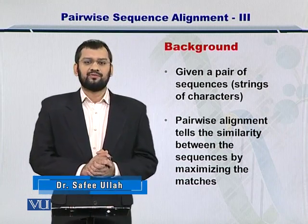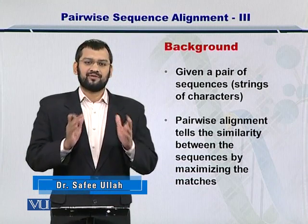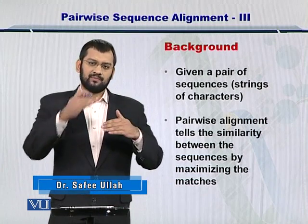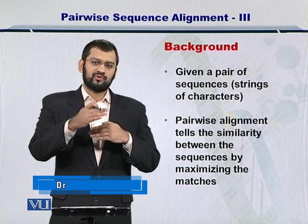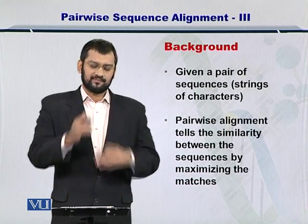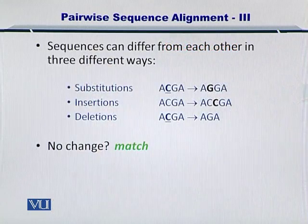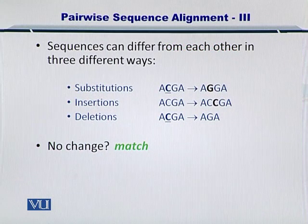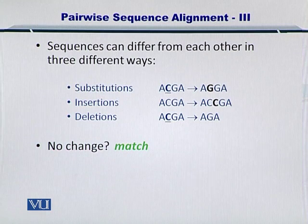Your objective is to maximize the number of matches between the source and the target sequence. Let's review the three sources of differences that can be present in biological sequences. Sequences can differ from each other in three different ways: substitutions, insertions, and deletions.